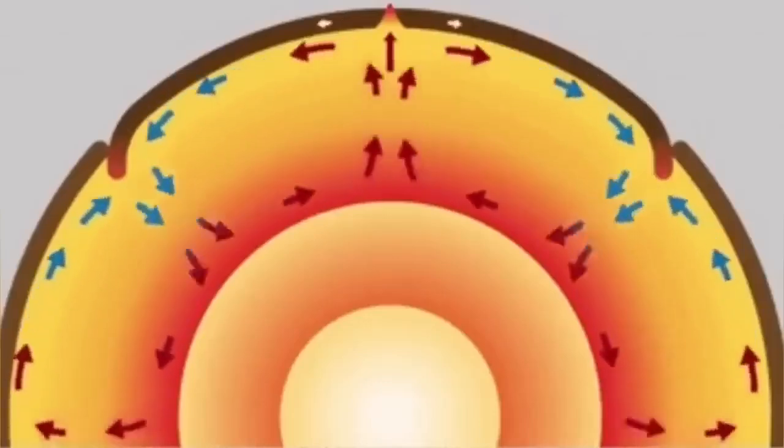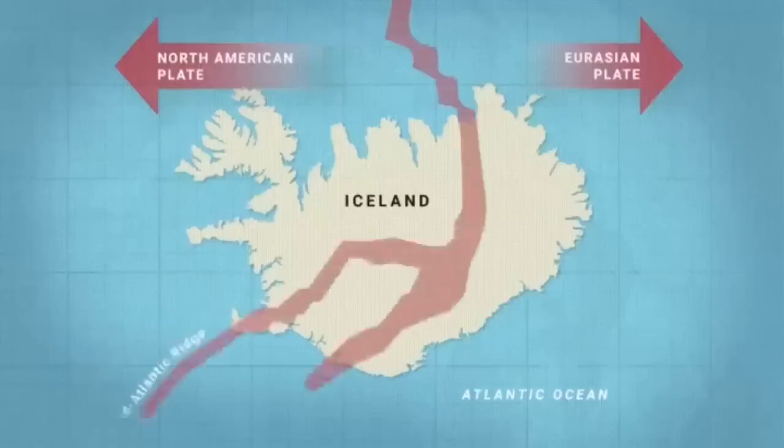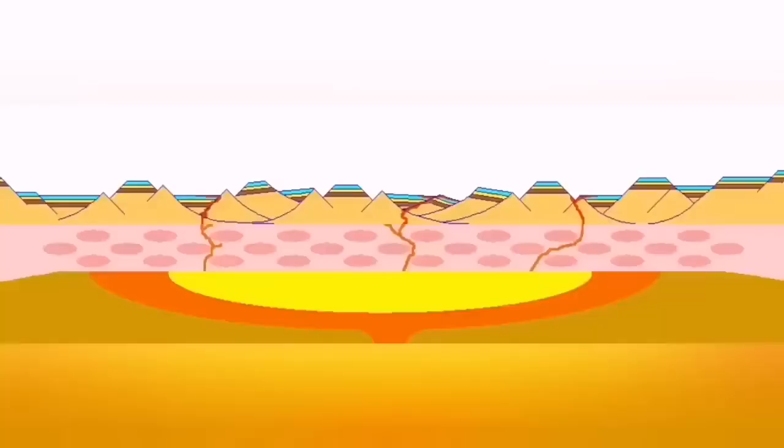The convection cracks the hardened solidified crust of the Earth, which we call lithosphere. Through these cracks magma can erupt. Such a thing happens in Iceland on the land where we can see the Eurasian plate and North American plate.